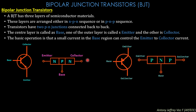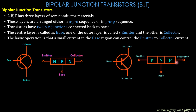The basic operation is that a small current in the base region can control the emitter-to-collector current. A very small amount of current flowing into the P terminal of the NPN transistor can control the total current. Similarly, the base current of a PNP transistor can control the current flowing from emitter to collector.